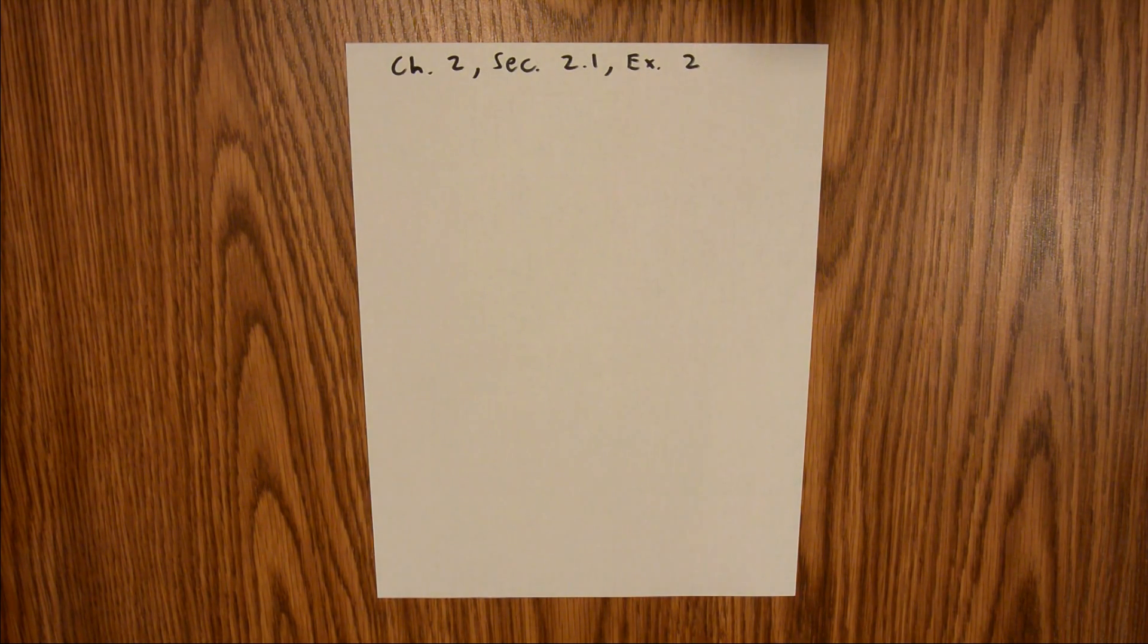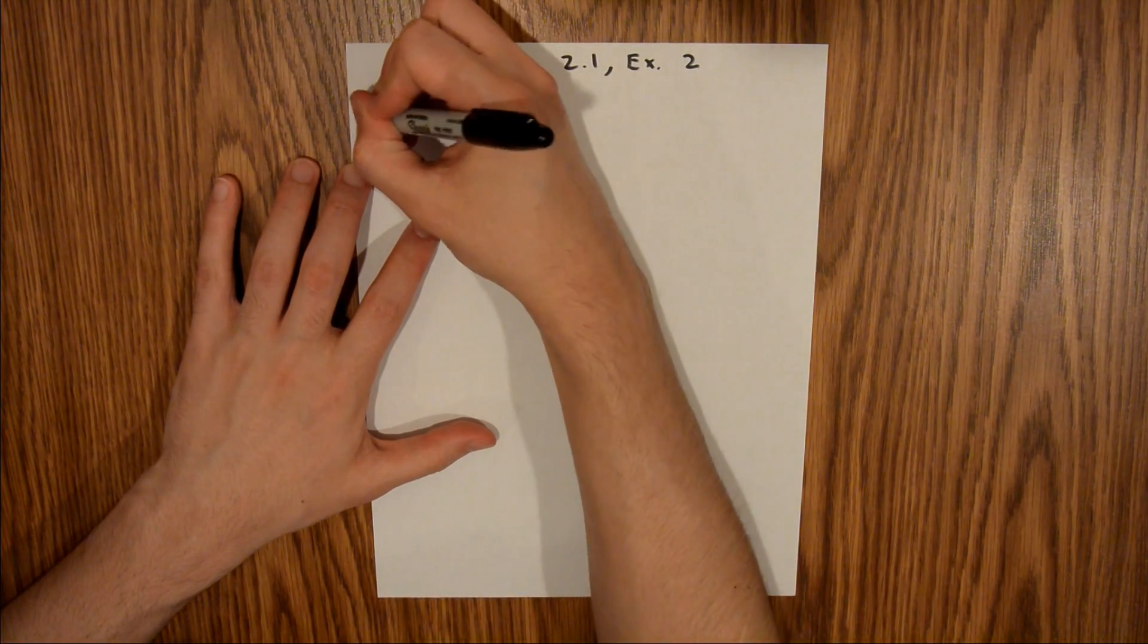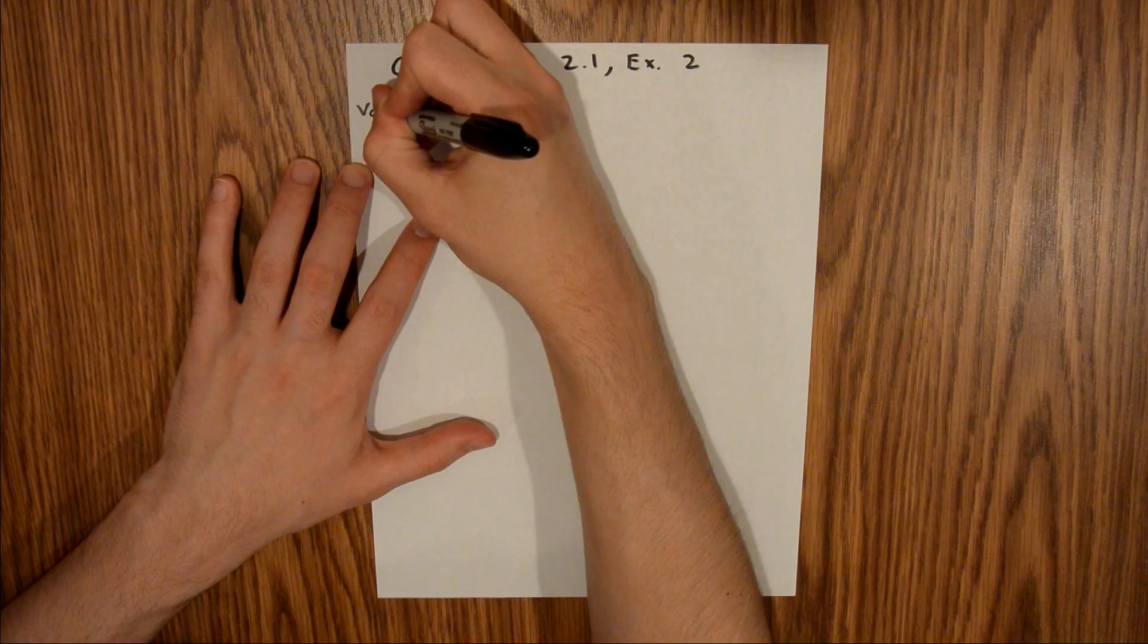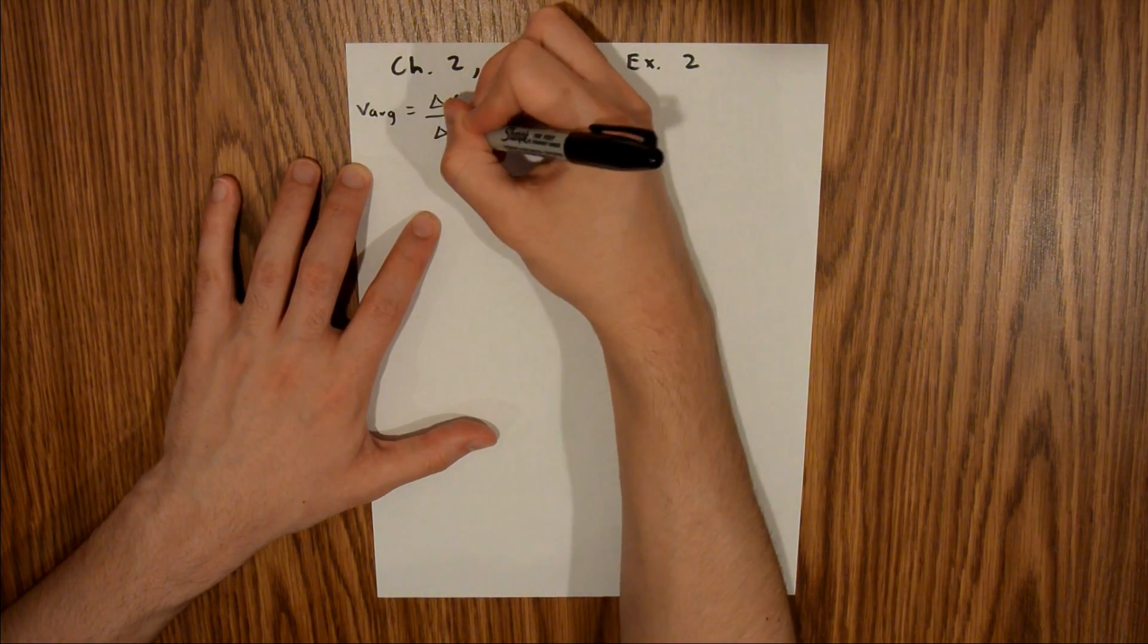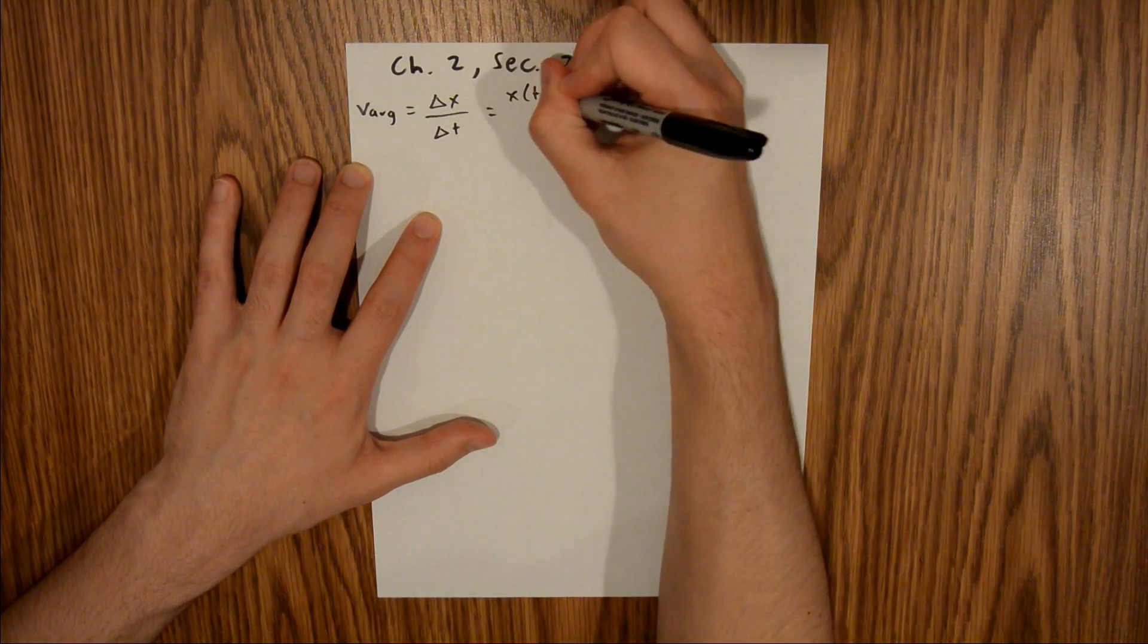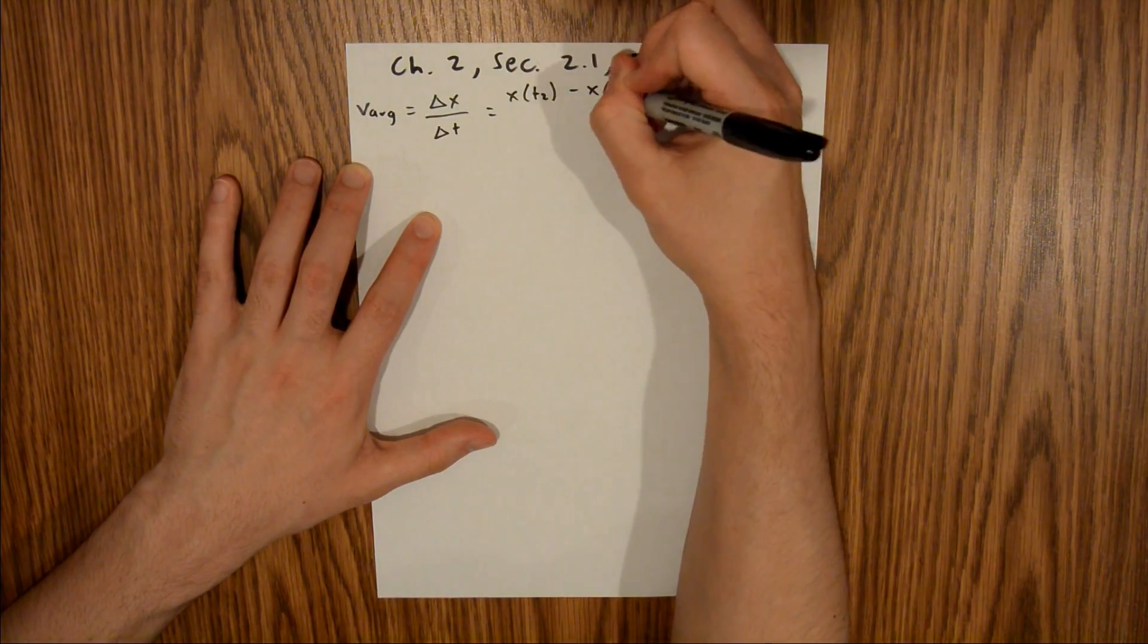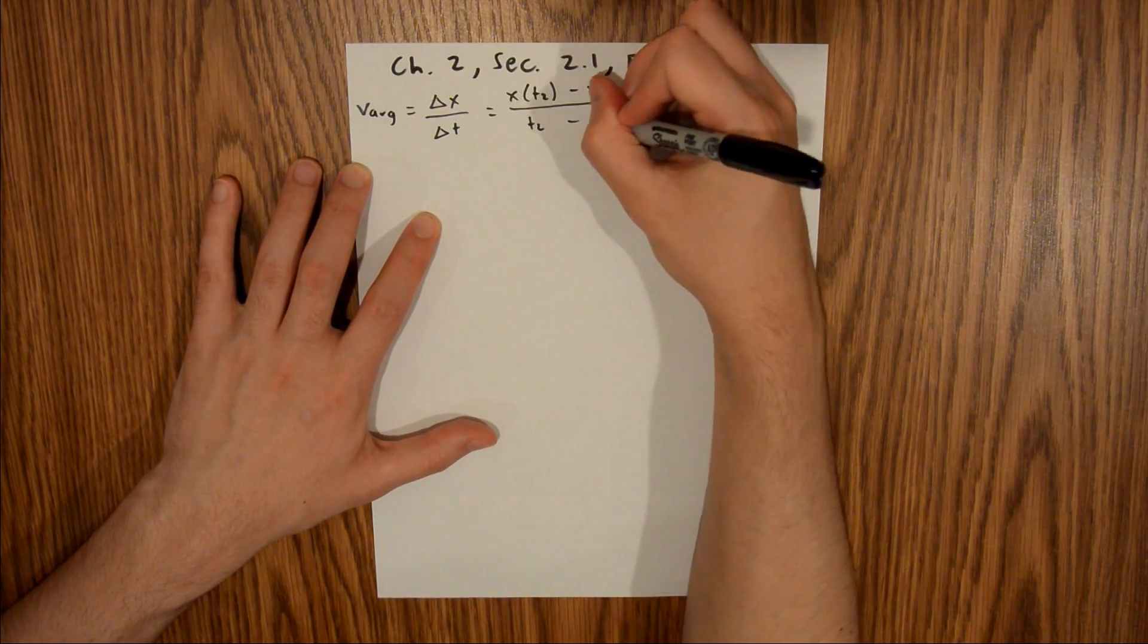We know that average velocity is equal to the change in position over the change in time. This is going to be equal to the position at time 2 minus the position at time 1, divided by time 2 minus time 1.